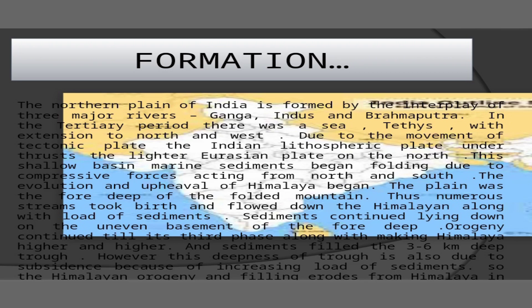Regarding the origins of plains, like other major relief features, plains are classified according to their origin. One rarely finds any large plain whose origin and present topography can be attributed to a single cause. Usually several processes have contributed to the final results, often in such a fashion that it is difficult to discriminate between them on the basis of their origin. The plains may be classified under the following categories.